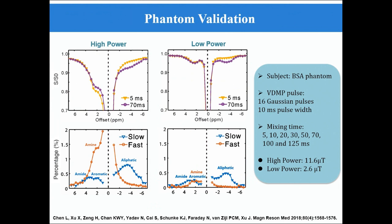Next, we tested the proposed methods using BSA phantoms. BSA phantoms contain various exchangeable protons, which makes them very suitable for validation. For the saturation modules, we used 16 Gaussian pulses with 10 millisecond durations. Each frequency offset has a VDMP curve with eight mixing times, and the Bloch fitting was performed to fit the VDMP curve at each frequency offset. The Z-spectra with different mixing times are shown in the top plots. The separation of fast and slow exchange transfers are shown in the bottom plots. From the separation result, the proposed method can efficiently separate the contributions of amide, amine, and aliphatic protons, which is very difficult to extract directly from the Z-spectrum using Lorentzian fitting-based methods.